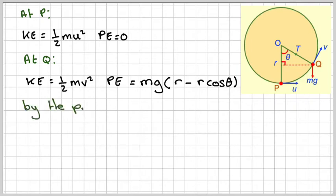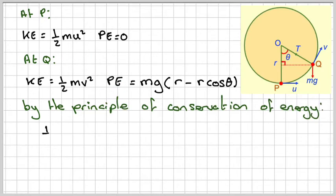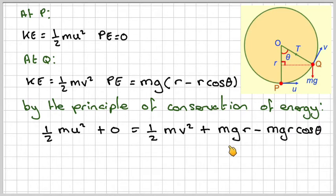By the principle of conservation of energy, at the start we have a half M U squared plus zero, and then at point Q we're going to have a half M V squared plus, multiplying this out, M G R minus M G R cos theta.